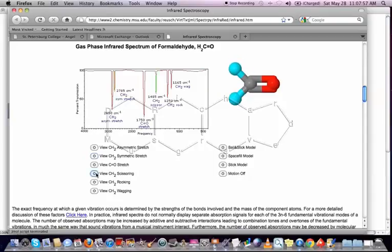Then you've got some other ones that occur, like this one, scissoring, rocking, and wagging. And all of those appear around this area of the spectrum, and usually these get blocked out by other things, so they're pretty hard to see. But these up here, the asymmetric and symmetric stretches, we often see those.